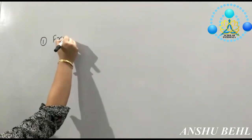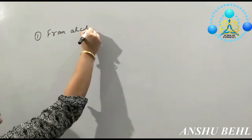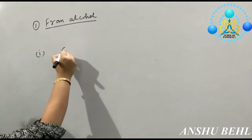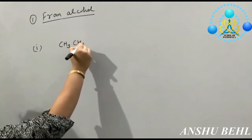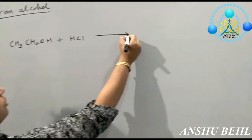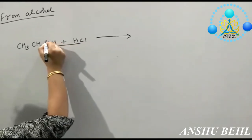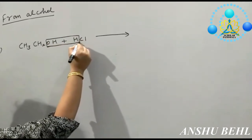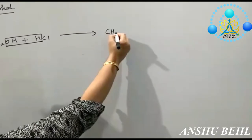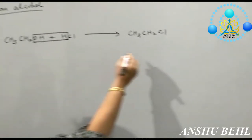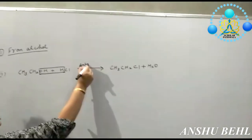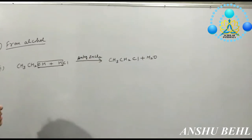How can you convert alcohols to alkyl halides? The first reaction is the reaction of alcohol with HCl. Taking ethanol with HCl — when ethanol reacts with HCl, H and OH combine to evolve water, and the remaining product is CH3–CH2–Cl, which is ethyl chloride. This is how ethanol is converted into ethyl chloride.